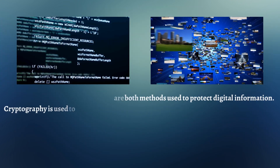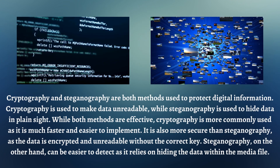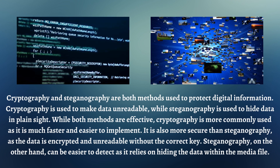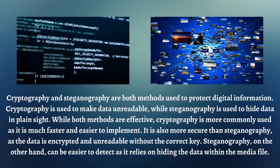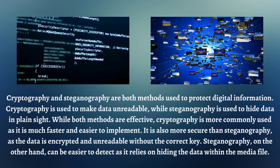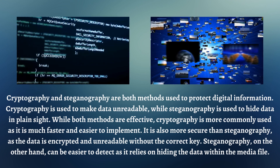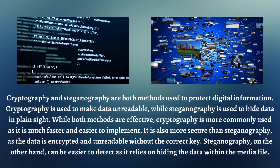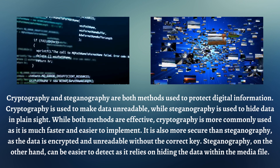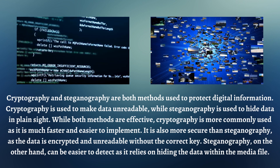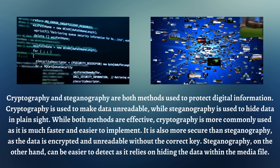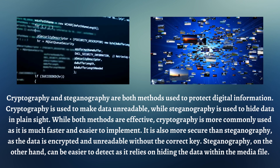Cryptography and steganography are both methods used to protect digital information. Cryptography is used to make data unreadable, while steganography is used to hide data in plain sight.